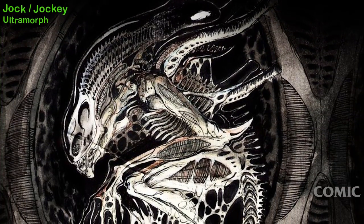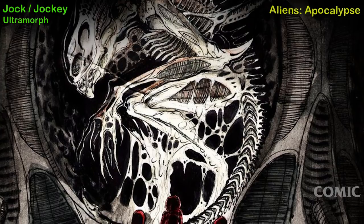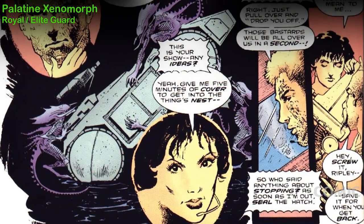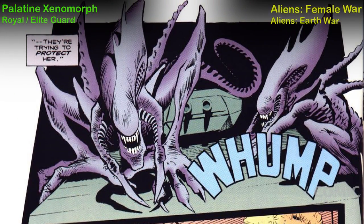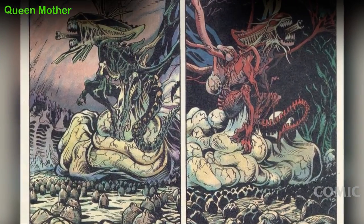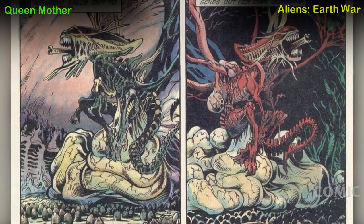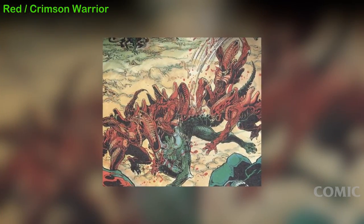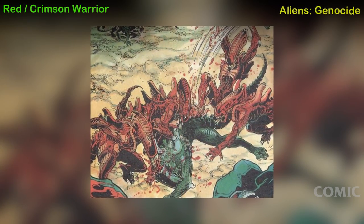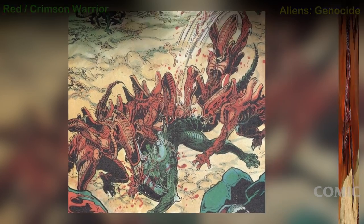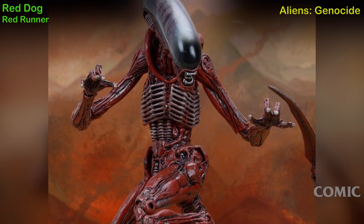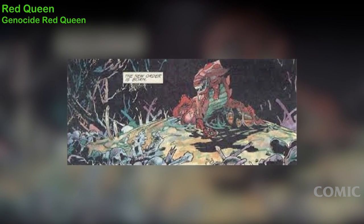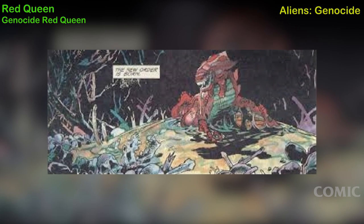Jock or Jockey Alien, also known as the Ultramorph Alien — Aliens Apocalypse comic. Palatine Xenomorph, also known as Royal or Elite Guard — Aliens Female War or Aliens Earth War comic, first appearance. Queen Mother Alien — Aliens Earth War comic, first appearance. Red or Crimson Warrior Alien — Aliens Genocide comics and NECA toyline. Red Dog Alien — Aliens Genocide comics and NECA toyline. Red Queen Alien — Aliens Genocide comics and NECA toyline.